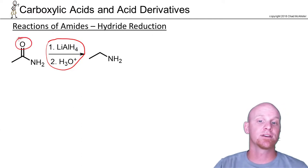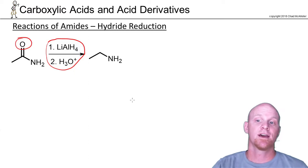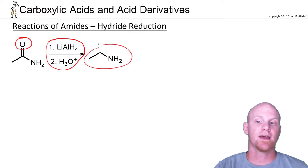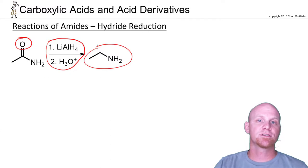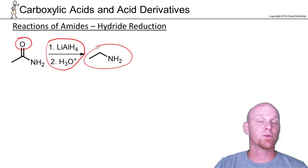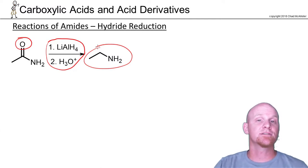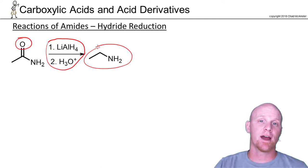The oxygen leaves preferentially before the nitrogen does, so you just end up with an amine. Don't confuse this with the Clemmensen or Wolff-Kishner reductions for ketones and aldehydes — this is specific to amides being turned into amines.